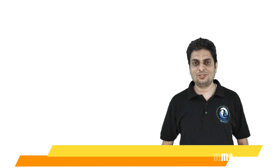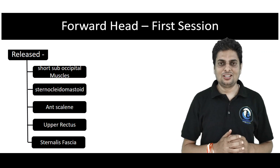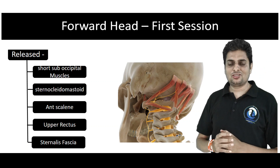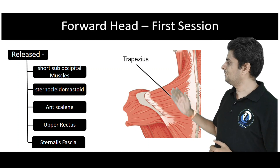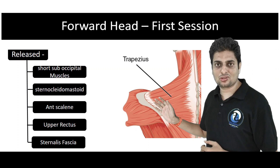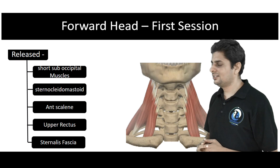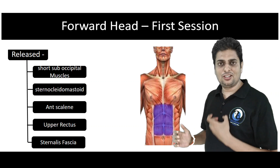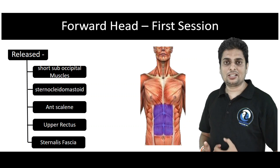After assessment, it was time for treatment. We started the first part of the treatment session by releasing: short sub-occipital muscles, sternocleidomastoid, upper trapezius especially clavicular fibers, anterior scalene, cervical fascia, and upper rectus abdominis.